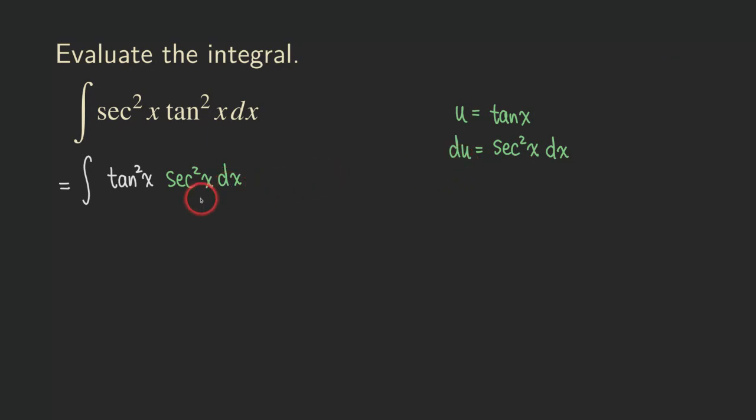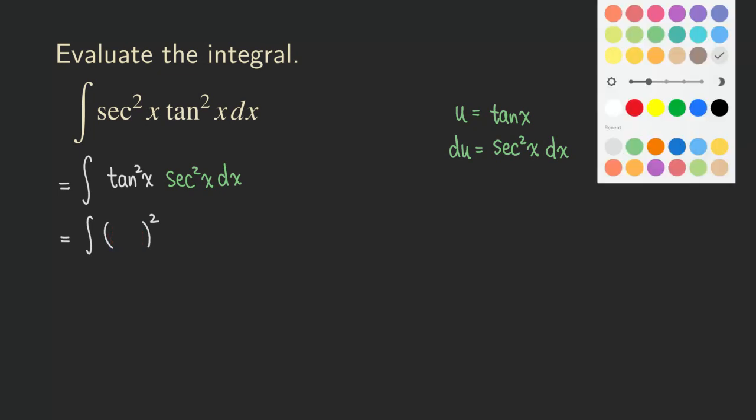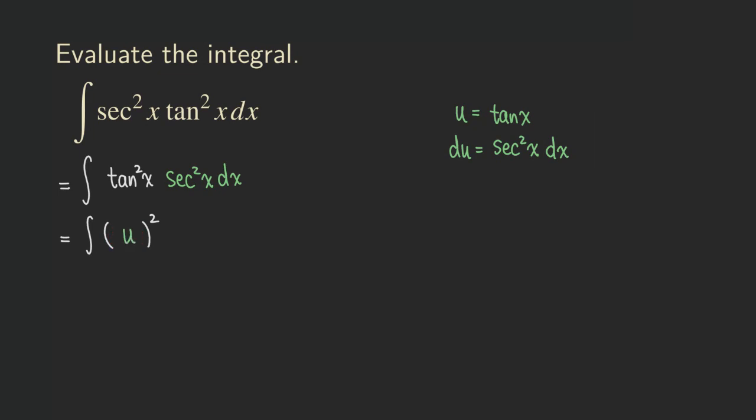So now what does the integral become? The integral actually becomes there was a square right here, so I'm going to put it as a square here. And then what do we fill inside the blank here? Because it's tangent square, and we are letting u be tangent, so we are going to put a u right here.